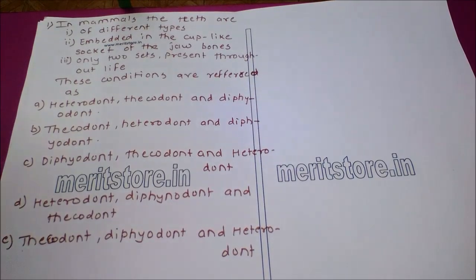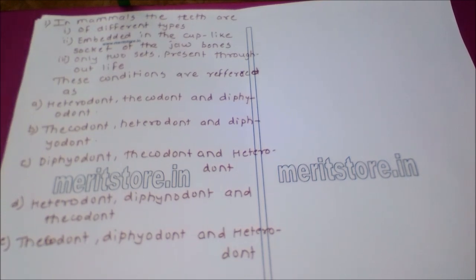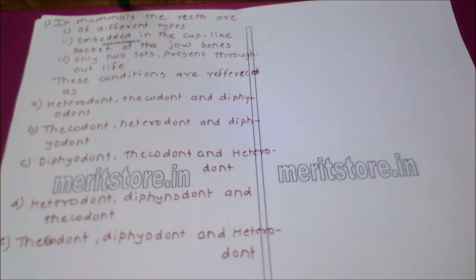The first question: in mammals, teeth are of different types, embedded in cup-like sockets of the jaw bones, and only two sets are present throughout life. These conditions are referred to as — option A: heterodont, thecodont, and diphyodont; option B: thecodont, heterodont, and diphyodont; option C: diphyodont, thecodont, and heterodont; option D: heterodont, diphyodont, and thecodont.